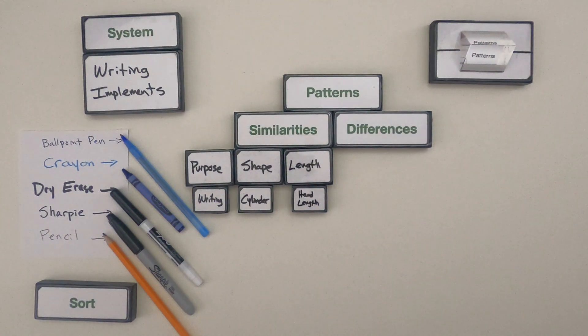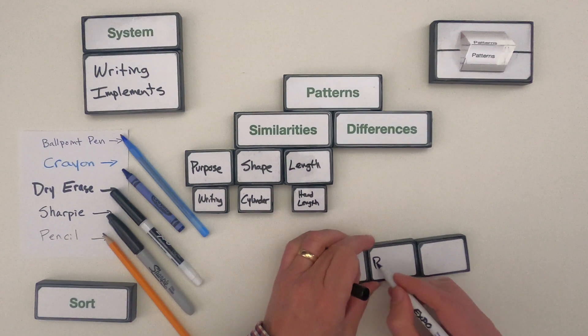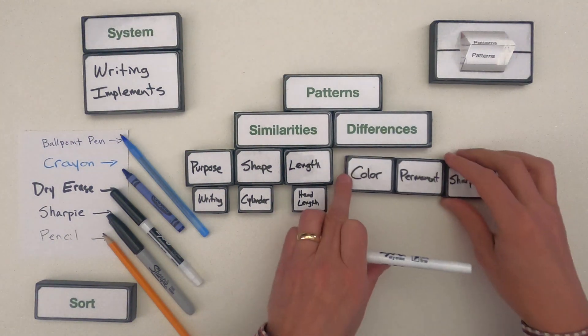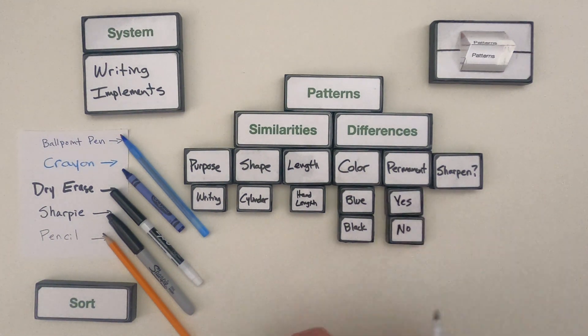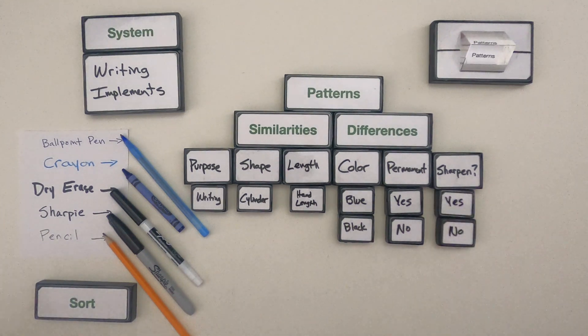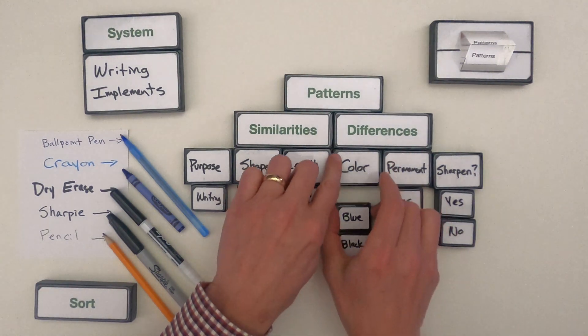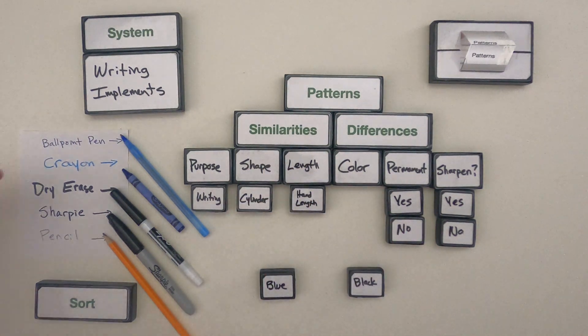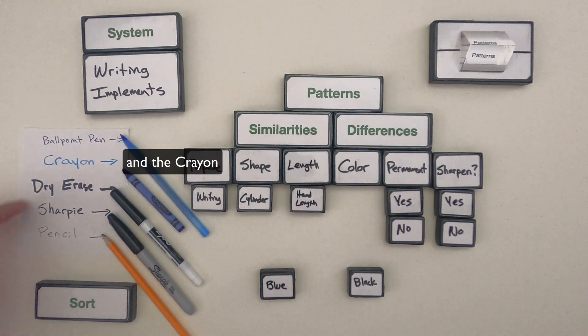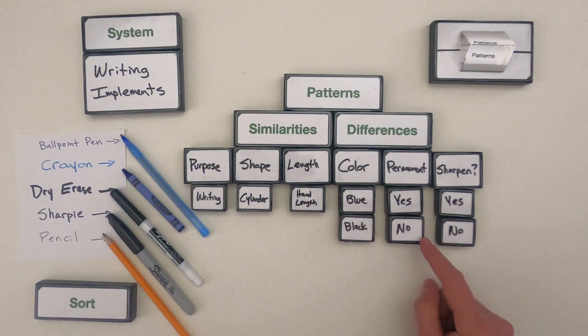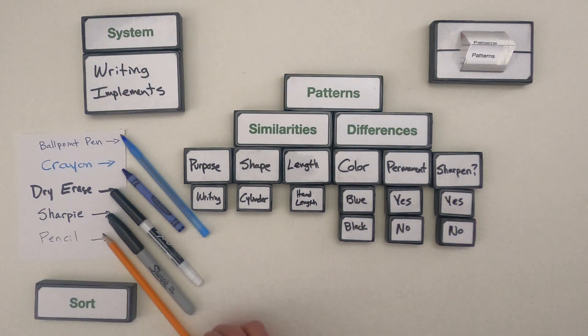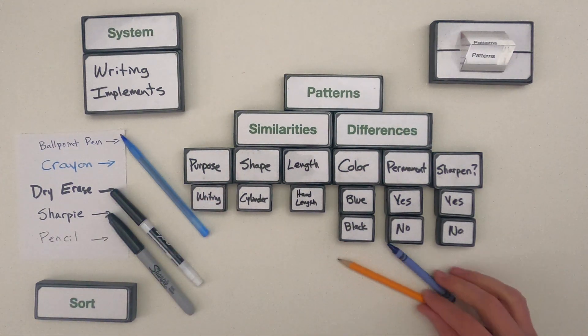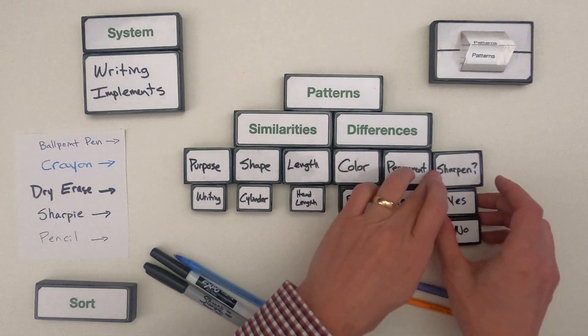Okay so some of the differences I noticed, patterns I noticed, was the color. There's blue versus black. And so I could sort these writing implements into those that are blue and those that are black. Those that are blue are going to be the ballpoint pen. Those that are black are going to be everything down below. We could also look at their permanency. So I would say the ones that aren't permanent would be the pencil and the dry erase marker. And then can you sharpen it? So a pencil and a crayon can both be sharpened. So I could sort those into things that can be sharpened and then these other ones are not going to be able to be sharpened.